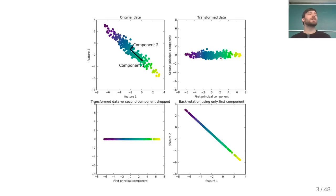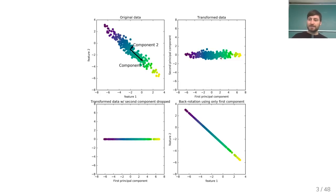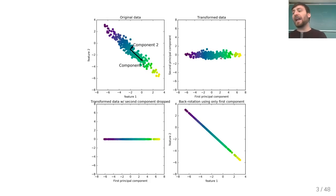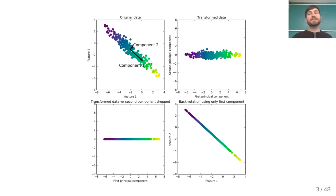PCA is very commonly used for dimensionality reduction. The way you use PCA to do dimensionality reduction is to drop some of the components. Usually you want to keep the top K components and throw away the lower components that have smaller variance. In 2D this is a little boring because the first component perfectly determines the second since there's only one orthogonal vector. The only thing you can do is drop the second component, making your data one-dimensional — this dimension corresponds to the direction of maximum variance in the original data.